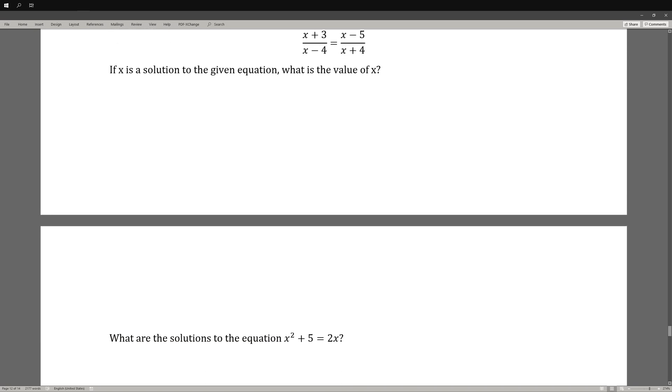If x is the solution to the given equation, what is the value of x? The first thing we're going to do is, since we're in a proportion, we're going to cross-multiply. So we have (x - 4)(x - 5) = (x + 3)(x + 4). And then we just distribute. Then we cancel out like terms. Negative 6x minus negative 16x equals 8. x equals negative one-half.